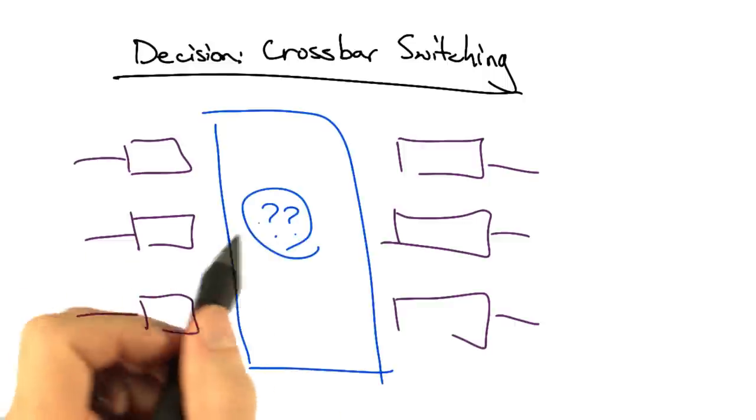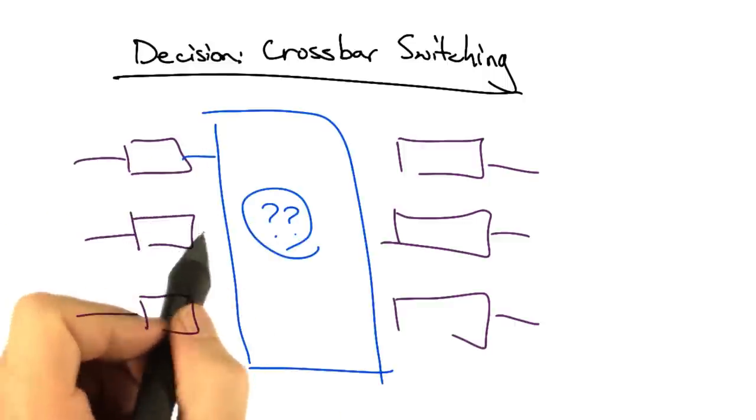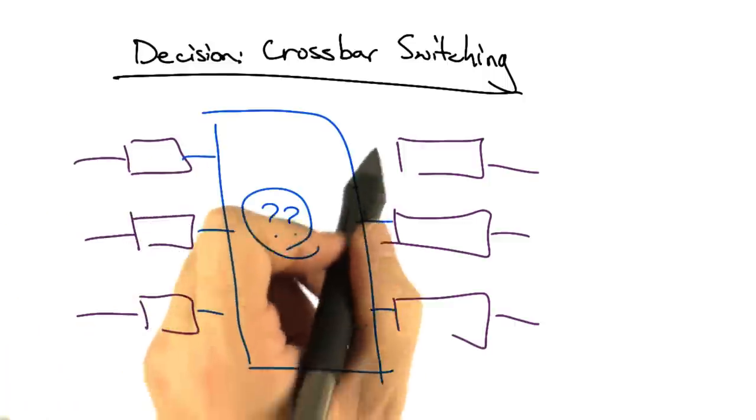The second important decision is the design of the interconnect, or how the line cards should be connected to one another.